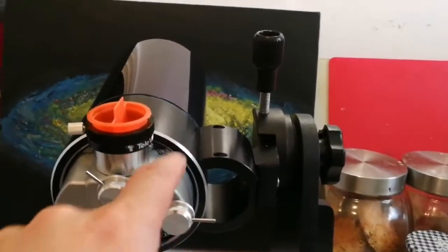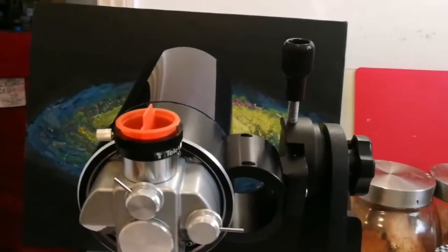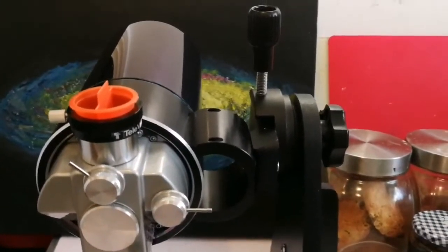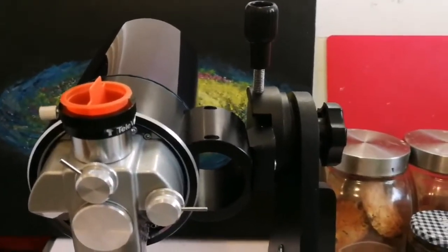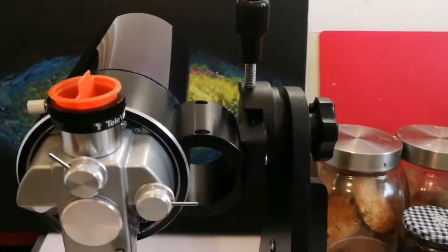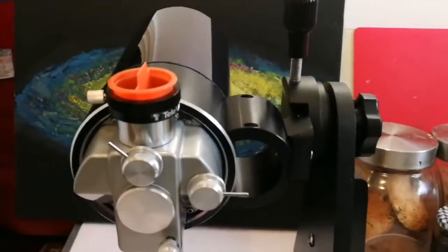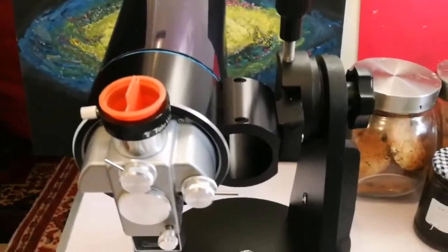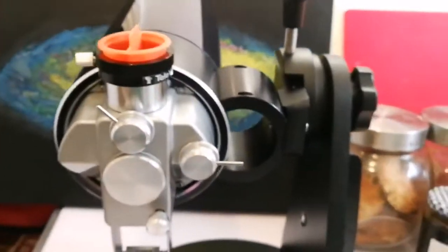It will not track, but for tracking, you can use the Virtuoso, the Heritage Skywatcher Heritage Virtuoso one, that is four and a half inch mount which has the tracking thing and go-to system. You can use that one. But this is enough for my needs.